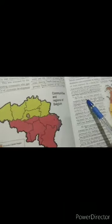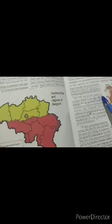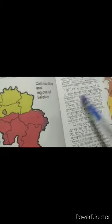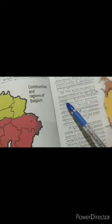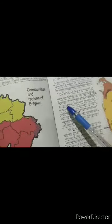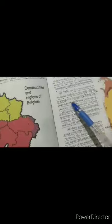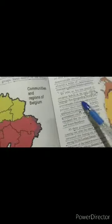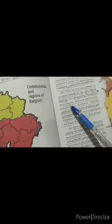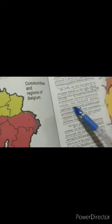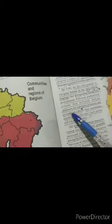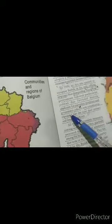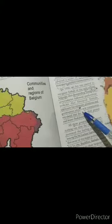In 1956, an act was passed to recognize Sinhala as the only official language, thus disregarding Tamil. The government followed a preferential policy that favoured Sinhala applicants for university positions and government jobs.